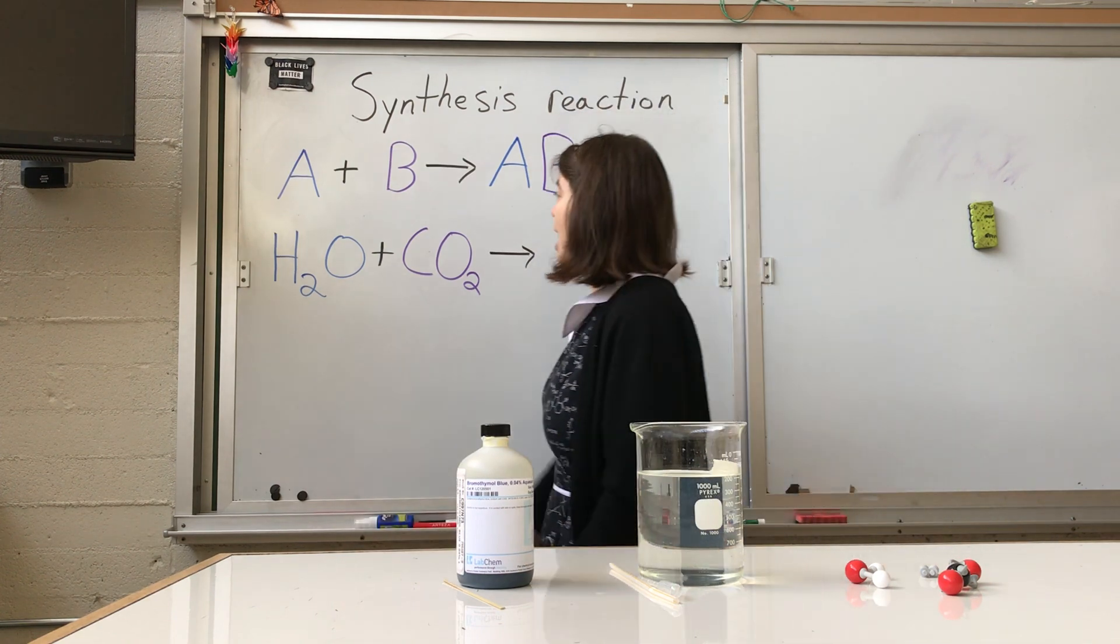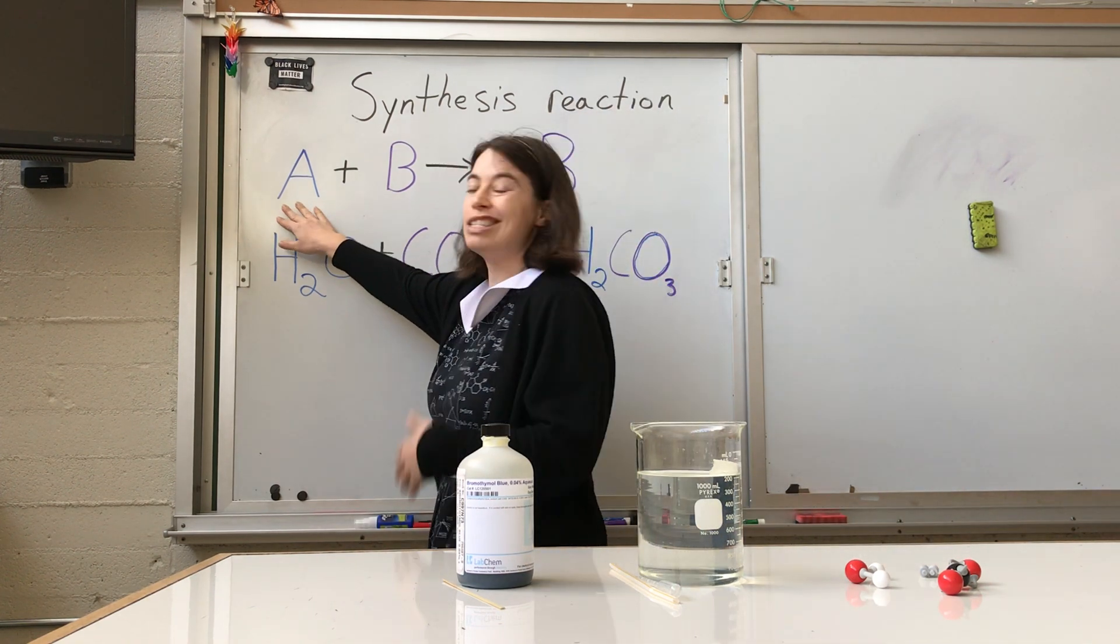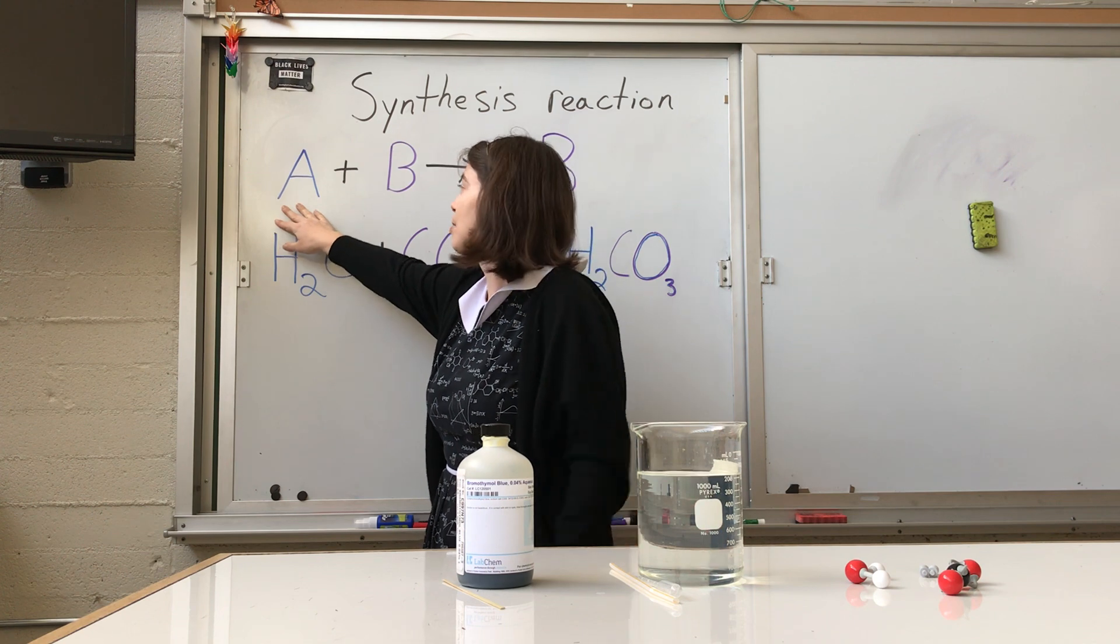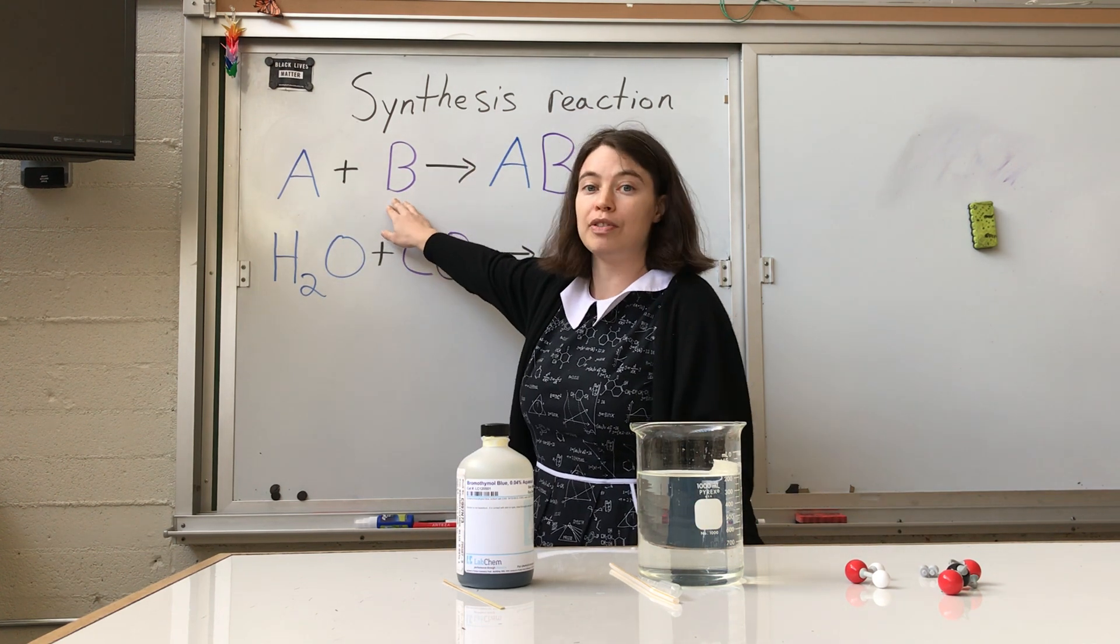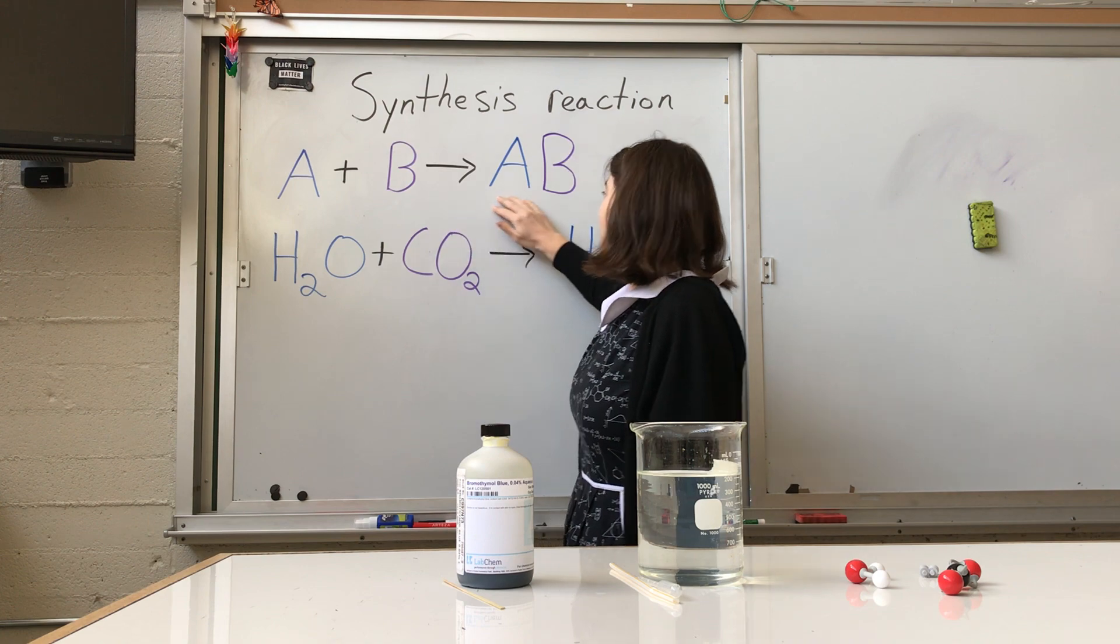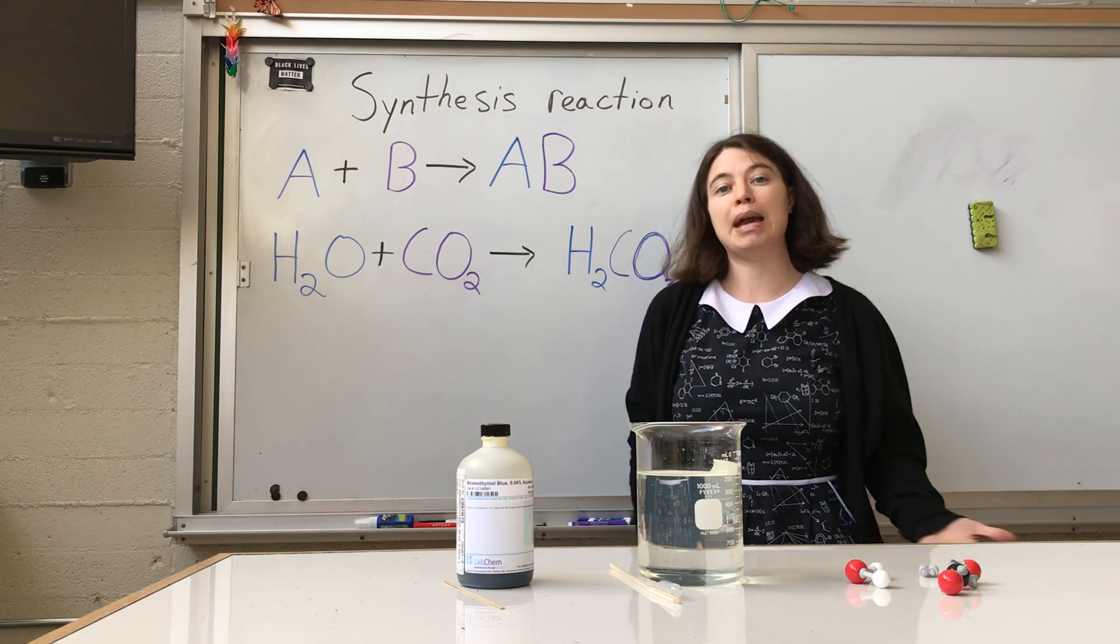The generic form of this reaction is A, where A is some sort of molecule that's on the smaller size, plus B, which is another different molecule, yields AB, so something bigger made out of these things.